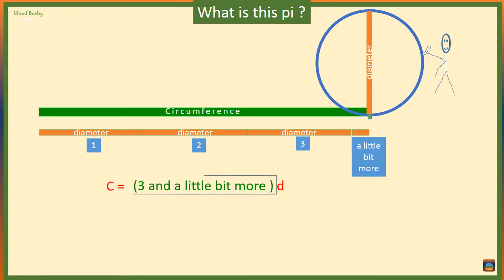It is this three and a little bit more that we assign the symbol pi. So the circumference of a circle is equal to three and a little bit more diameters. This is the formula you are probably familiar with.